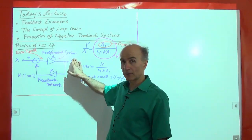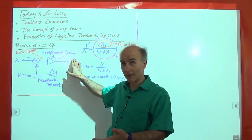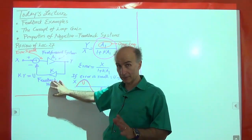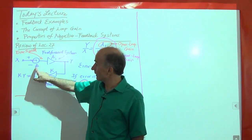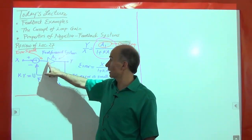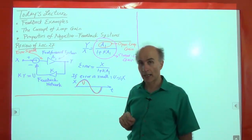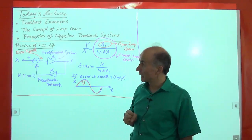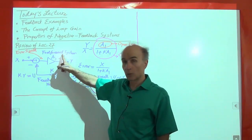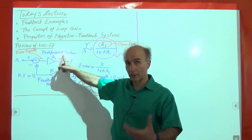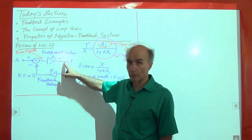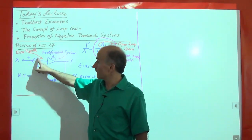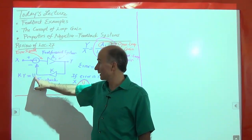We sense the output of the system — it could be the output voltage of an amplifier or the speed of a car — and pass it through a network, then subtract the result from the input. The input does not go directly in; it goes to the subtractor. This forms the overall negative feedback system. We need four components: the original feed-forward system we are trying to correct, a means of sensing the output, a feedback network, and a subtractor that subtracts the feedback signal from the input signal.